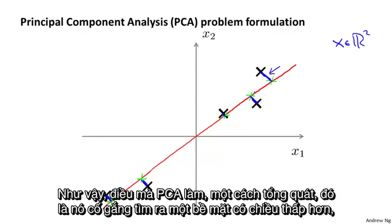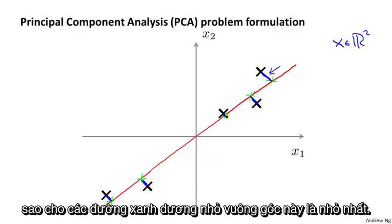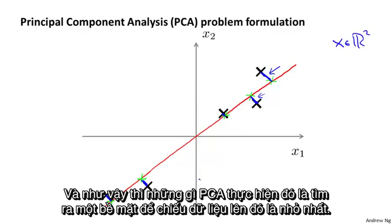What PCA does formally is it tries to find a lower dimensional surface — really a line in this case — onto which to project the data, so that the sum of squares of these little blue line segments is minimized. The length of those blue line segments is sometimes also called the projection error. So PCA tries to find the surface onto which to project the data so as to minimize that.